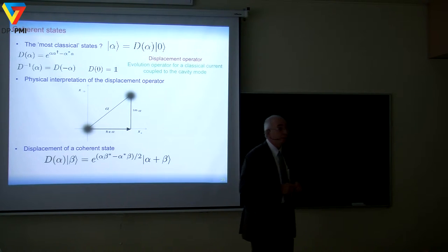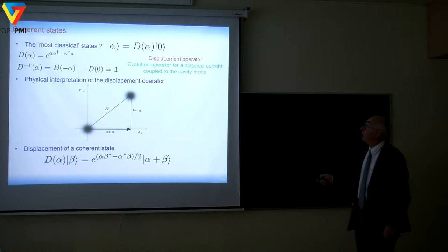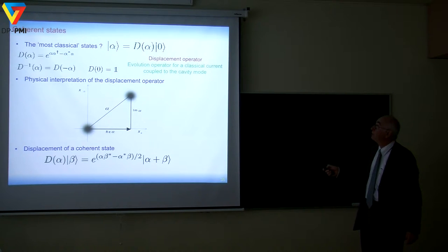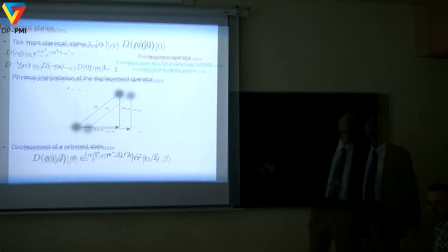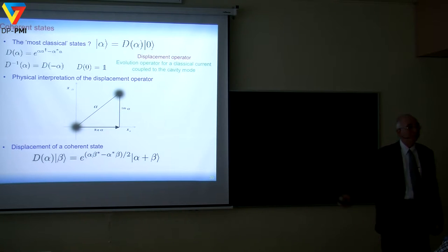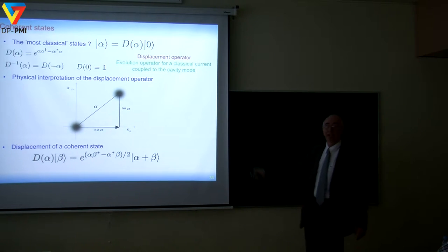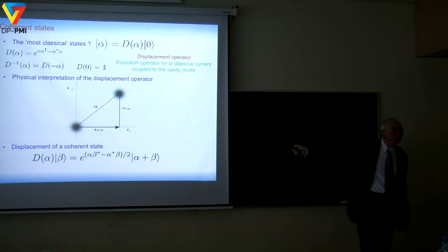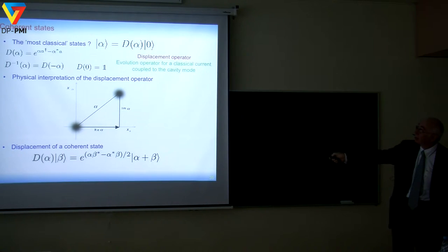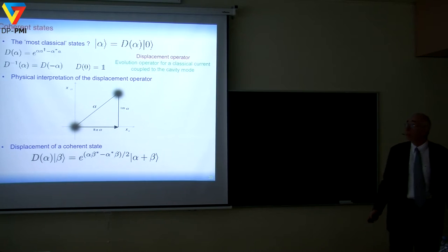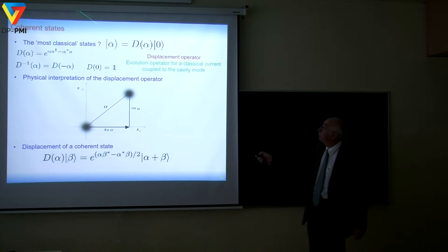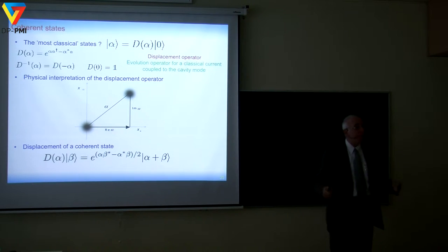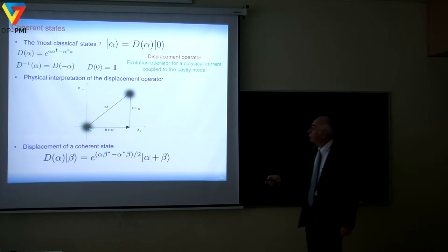Coherent states are generated from the vacuum by the action of the displacement operator D(α) = exp(αa† − α*a), which is unitary. The displacement operator simply translates the vacuum in phase space by α — placing it on the real axis by Re(α) and on the imaginary axis by Im(α). Coherent states are eigenstates of the annihilation operator: a|α⟩ = α|α⟩. This is their main property — it means that the average value of the electric field in a coherent state is simply the classical electric field expression with a and a† replaced by the complex amplitude α and its conjugate α*. This is non-zero, very much like a standard Maxwell mode.